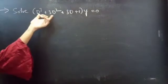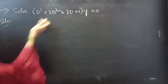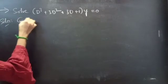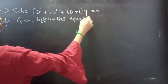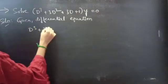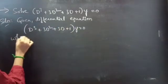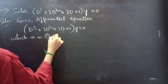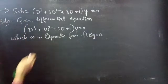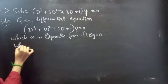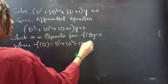Solve: (D³ + 3D² + 3D + 1)y = 0. We are already given the equation in operator form. So the given differential equation is D³ + 3D² + 3D + 1 into y equals 0, which is in operator form f(D)·y = 0. By comparing, we get f(D) = D³ + 3D² + 3D + 1.